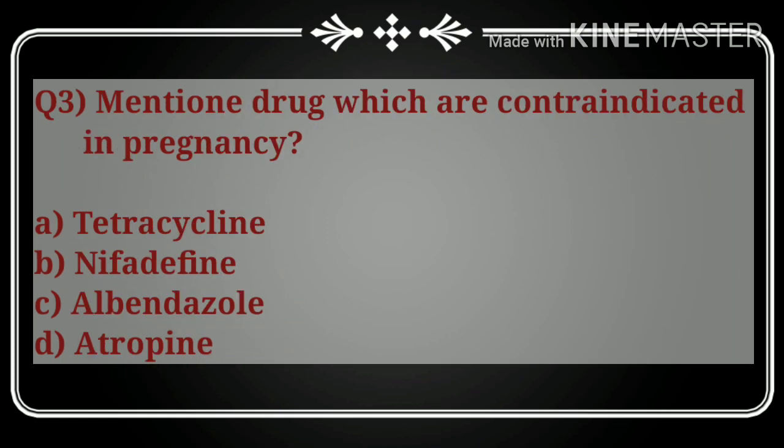Question number three: mention the drug which is contraindicated in pregnancy. The options are: A) tetracycline, B) nifedipine, C) albendazole, and D) atropine. The correct answer is option A, tetracycline. Tetracycline is contraindicated in pregnancy because it forms chelation complexes with calcium, iron, and aluminum. The developing infant requires calcium for bone formation, and chelation prevents proper absorption, leading to underdeveloped bones and body.